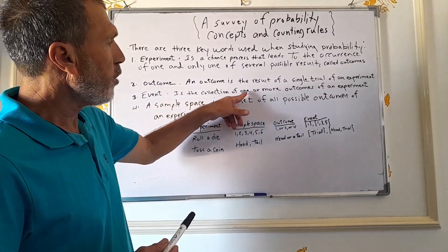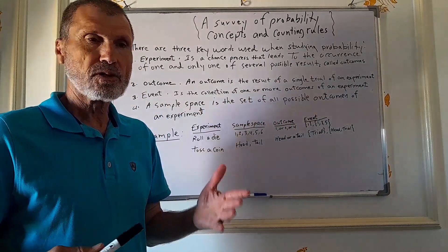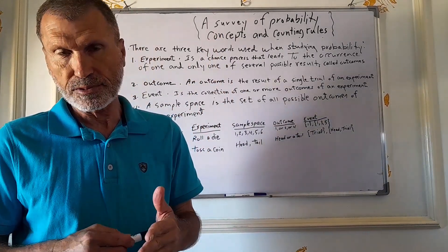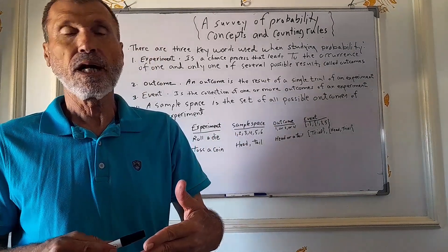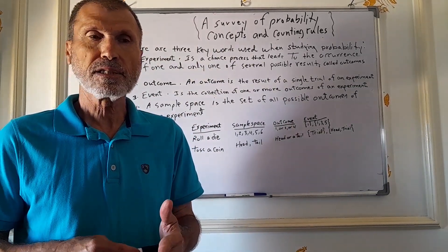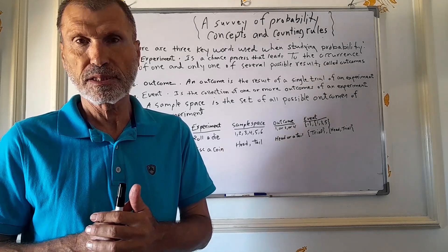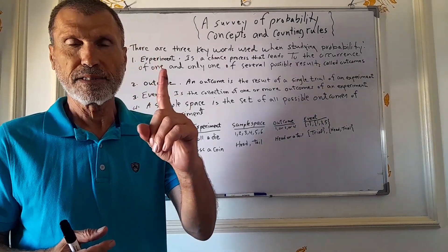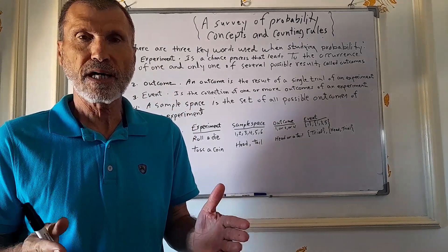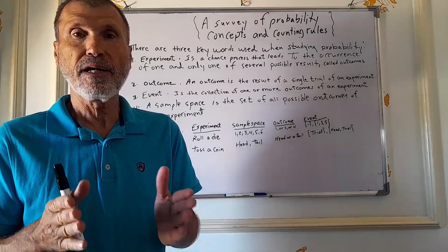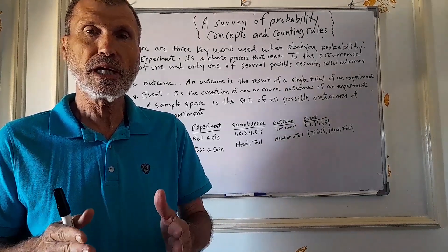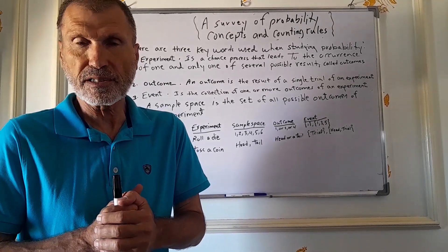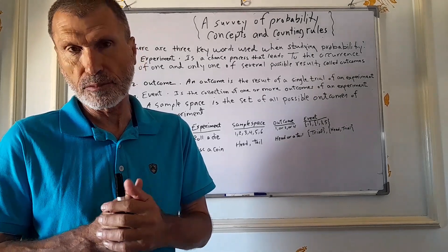Event is the collection of one or more outcomes of an experiment. The event could be one outcome or could be a group of outcomes. For instance, rolling a die gives six possible outcomes from one to six. The event could be just the number one, or it could be the odd numbers — one, three, and five. This is an event: a collection of one or more outcomes.